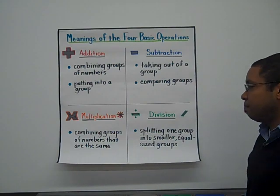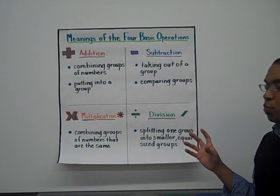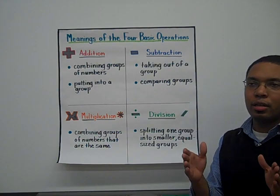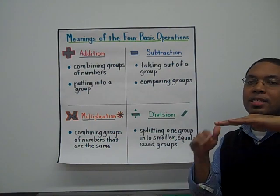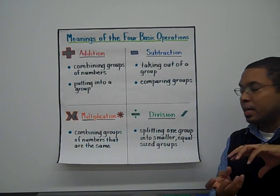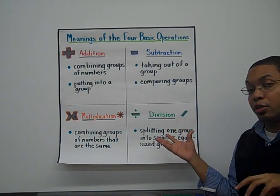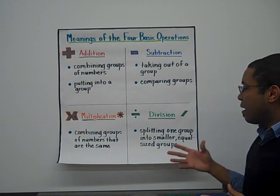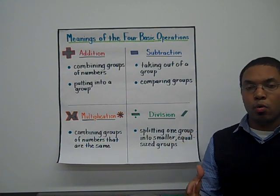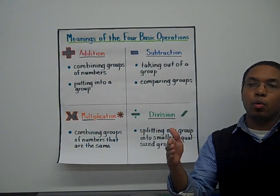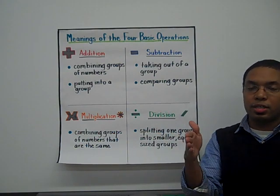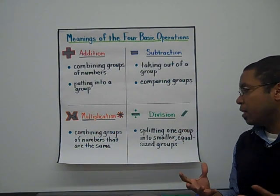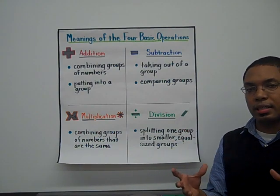And the last one is division. Division means splitting one group into smaller, equal-sized groups. That's why in fractions, the denominator is always going to be the thing that tells you how many equal-sized pieces it takes to make one whole. That's why on a number line, when we split up our wholes, we're splitting it into equal parts. And that's what division means — splitting one group into smaller, equal-sized groups.